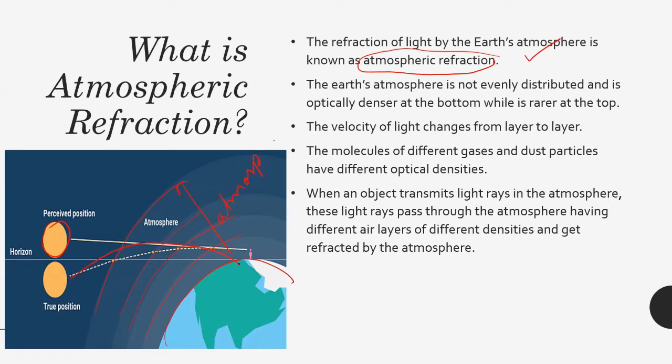The Earth's atmosphere is not evenly distributed and is optically denser at the bottom while rarer at the top. Yes, that's what I told you. Now we know the velocity of light changes from layer to layer. Why? Because optical density also changes. The molecules of different gases and dust particles have different optical densities. That's why they have different refractive indexes.